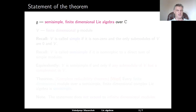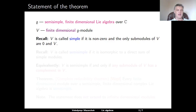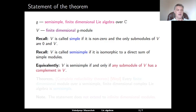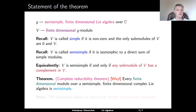We work with a semi-simple finite-dimensional complex Lie algebra G and consider a finite-dimensional G-module V. Recall that the module V is called simple if it is non-zero, and the only sub-modules of V are the zero sub-module and V itself. Furthermore, we call V a semi-simple module if it is isomorphic to a direct sum of simple modules. An equivalent condition: a module V is semi-simple if and only if any sub-module of V has a complement in V.